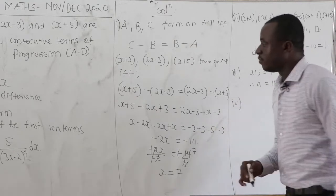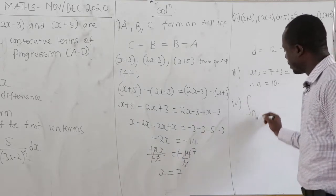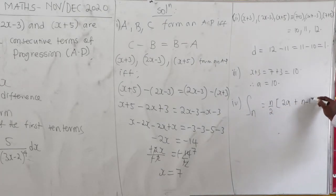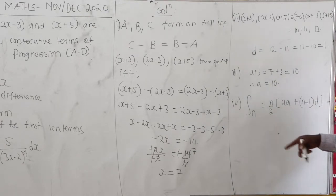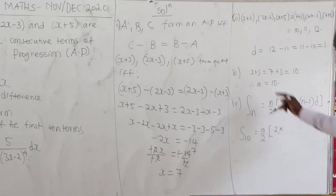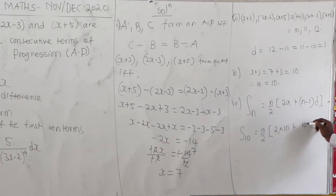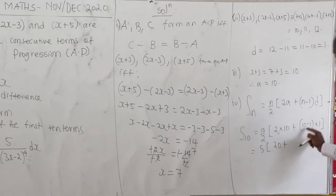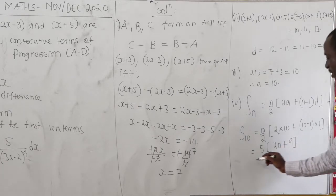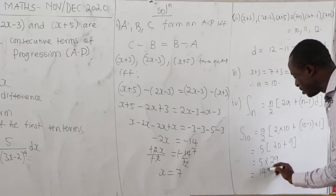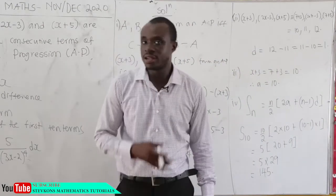The fourth part asks for the sum of the first 10 terms. The formula is S_n equals n over 2 times (2A plus (n minus 1)D). With n equals 10, A equals 10, D equals 1: S_10 equals 10 over 2 times (2 times 10 plus 9 times 1) equals 5 times 29 equals 145.